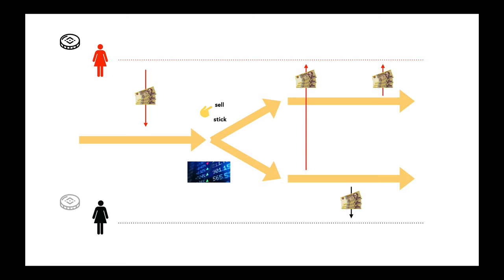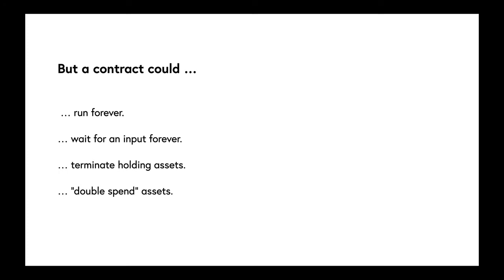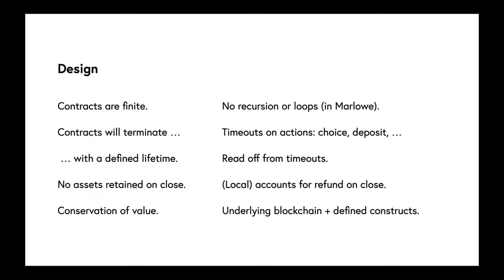In designing Marlowe, a program running on a blockchain could run forever. It could wait for an input forever, it could terminate holding some assets, and it could potentially double spend those assets. We're able to rule out all of those eventualities. There is no recursion, no loops in Marlowe itself, so contracts are finite.